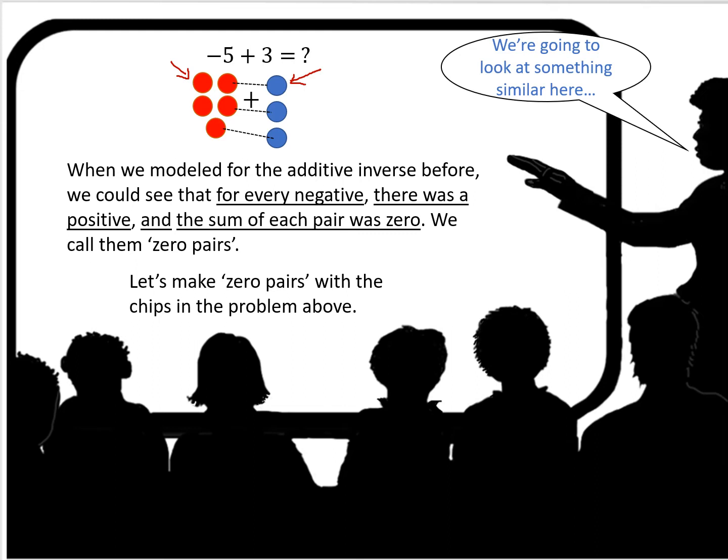When we modeled for the additive inverse before we could see that for every negative there was a positive and the sum of each pair was 0. We call these zero pairs. Let's make zero pairs with the chips in the problem above. So I have a negative and a positive, I have a negative and a positive, I have a negative and positive.